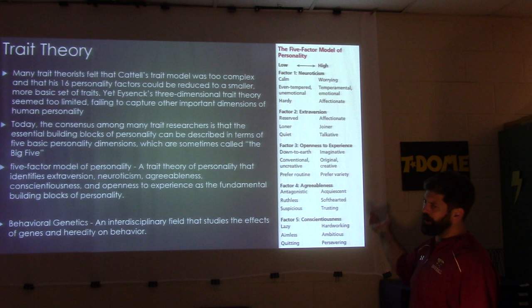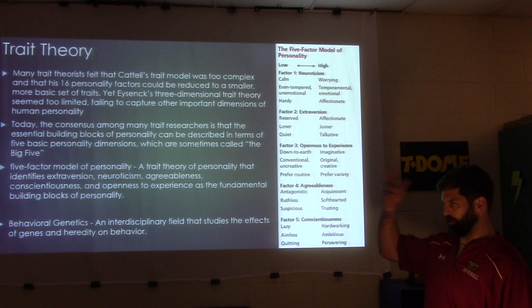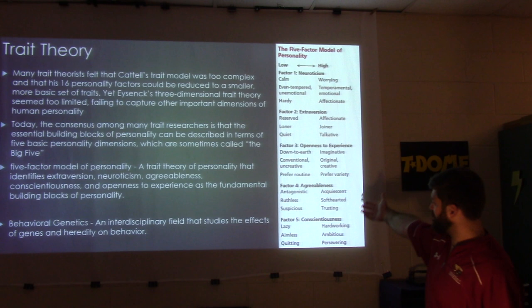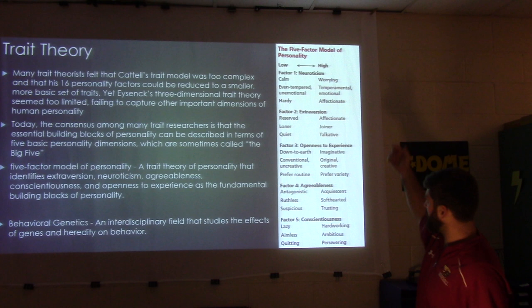An easy way to remember the Big Five is the acronym OCEAN: Openness to experience, Conscientiousness, Extroversion, Agreeableness, and Neuroticism. That's the five-factor model of personality.